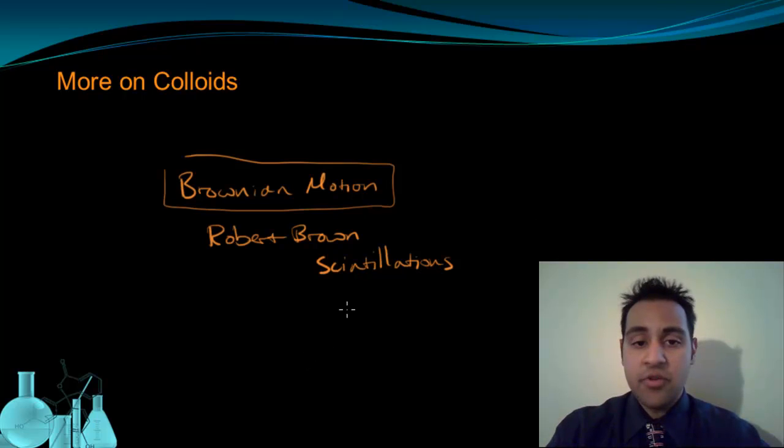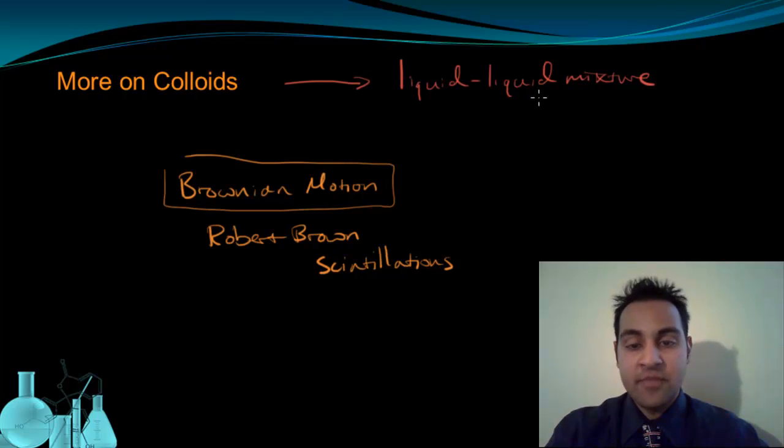The second thing we want to look at for colloids is one particular type of colloid. And that's a colloid with a liquid-liquid mixture. Now, why would you have a special kind of liquid-liquid mixture? There are no large particles of a liquid that can get separated. Typically, you either have a liquid that can dissolve in another liquid, like water and alcohol, or you have two liquids that can't mix, like oil and water. But there is a way to make a liquid-liquid colloid, and that is called an emulsion.